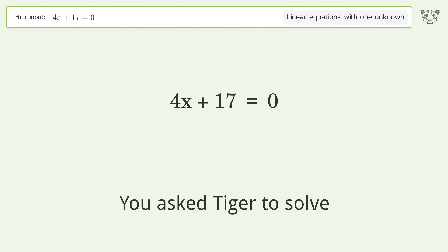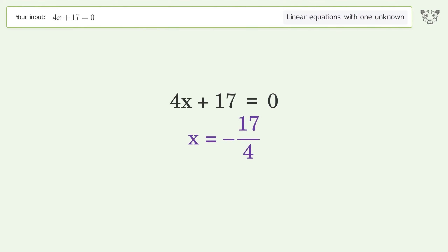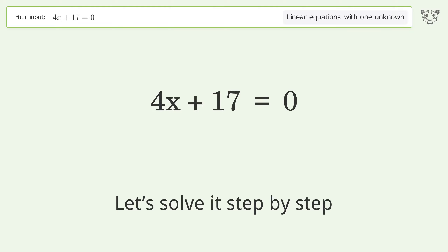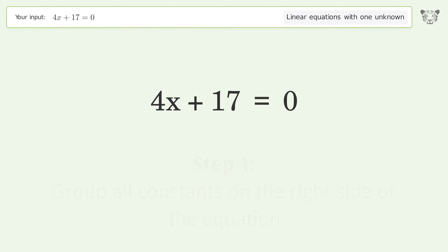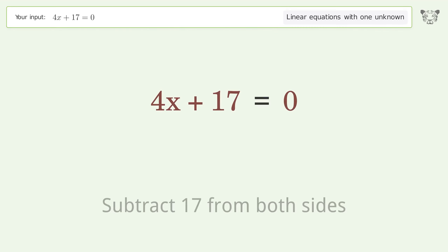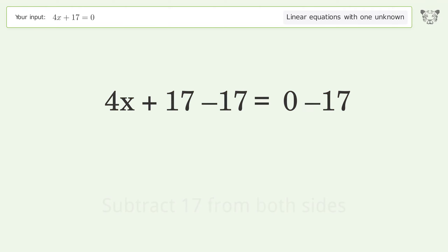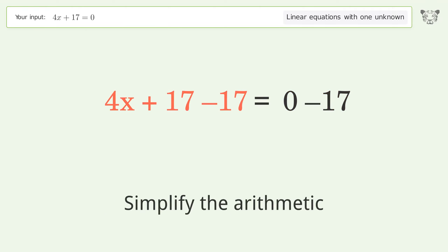Tiger was asked to solve a linear equation with one unknown. The final result is x equals negative 17 over 4. Let's solve it step by step. Group all constants on the right side of the equation, subtract 17 from both sides, and simplify the arithmetic.